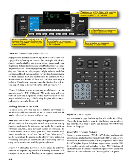Review the documentation for that specific unit and installation to determine what information and levels of data are available and require updates. Usually, only one page can be displayed at a time. The airport page is displayed on the FMS in figure 3-3. Figure 3-3 shows how to access pages and chapters on one manufacturer's FMS.